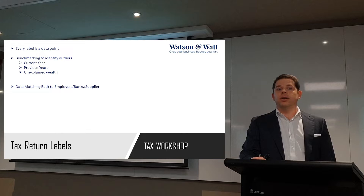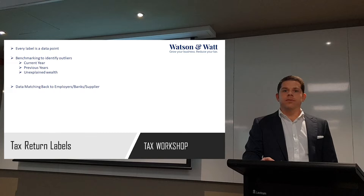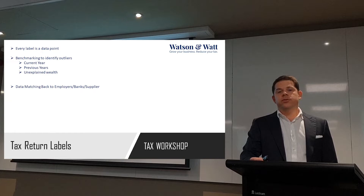Those sorts of things all paint a picture of who you are as a taxpayer. The last one is unexplained wealth, and that really comes down to the profile of the taxpayer. So if you live in a $2 million house in your name but you're only earning $30,000 in the tax return, they're going to start asking questions about how you can afford this lifestyle. And that all goes back to the tax return labels and the data matching.